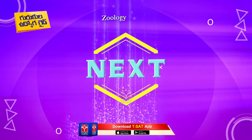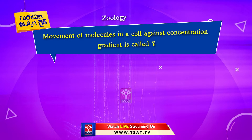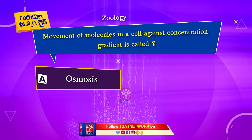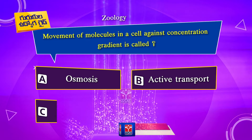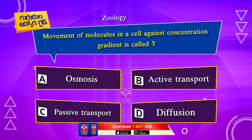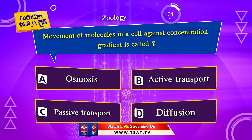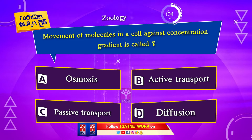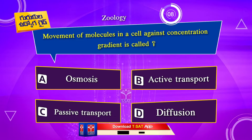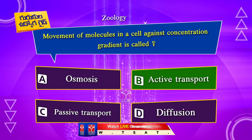Next question. Movement of molecules in a cell against concentration gradient is called: Option A. Osmosis. Option B. Active transport. Option C. Passive transport. Option D. Diffusion. The correct answer is Option B. Active transport.